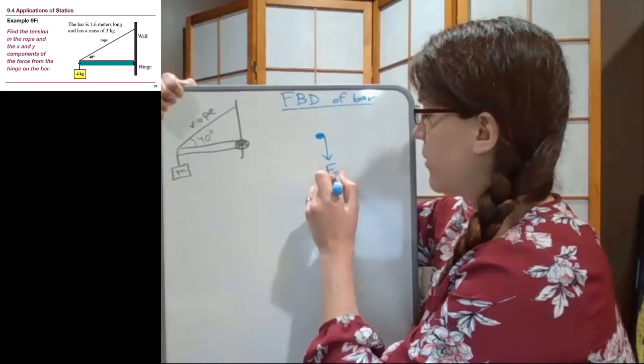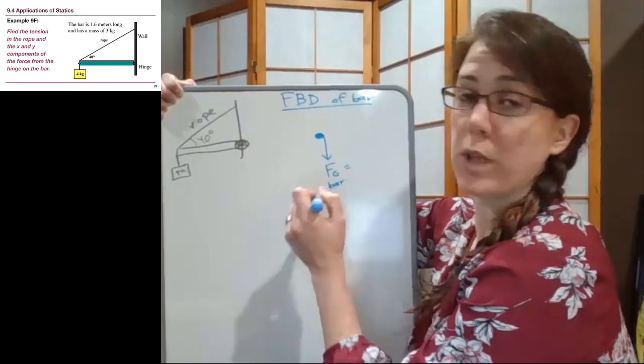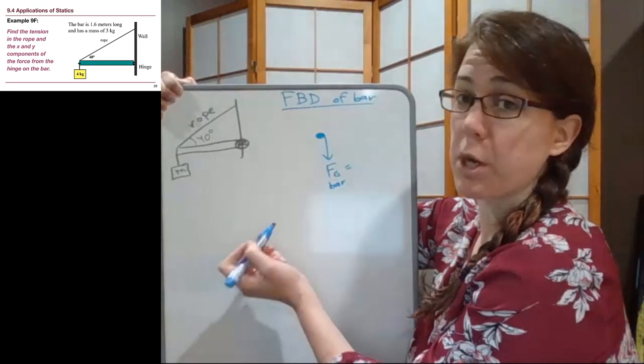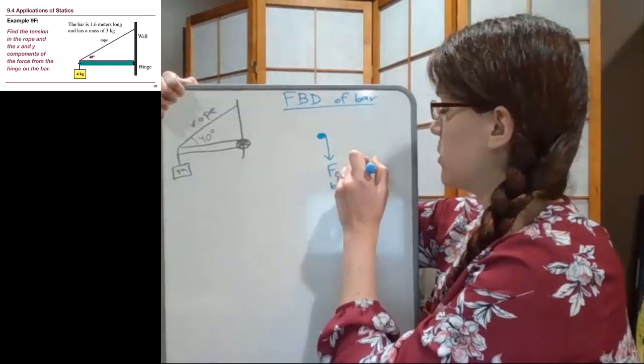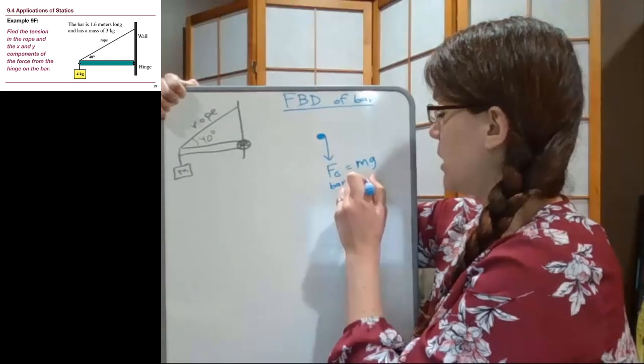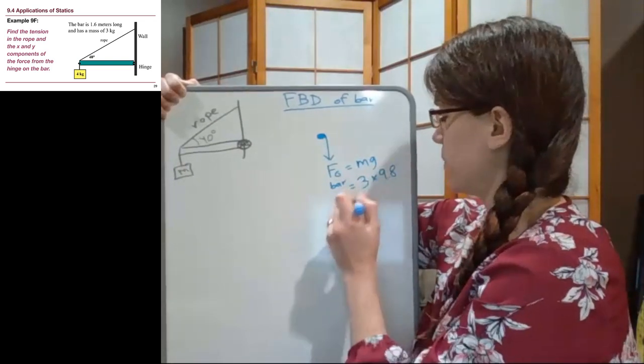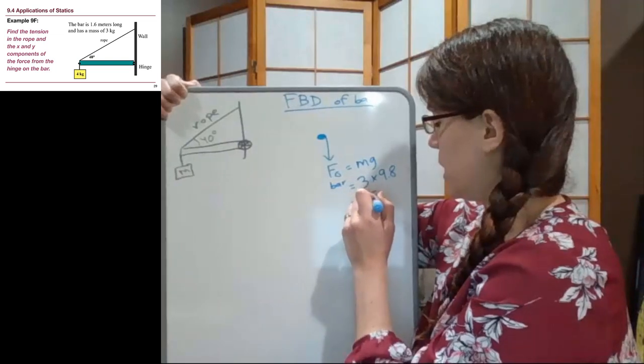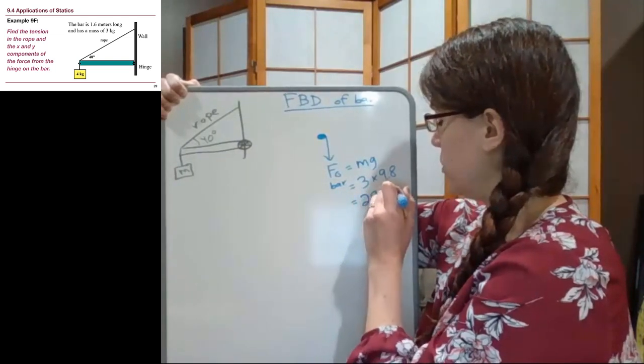So we'll start with the gravity of the bar itself, and if we look back at the slide, we're told that the bar has a mass of 3 kg. So when we're doing mg, it's 3 times 9.8, and so that's 29.4 newtons.